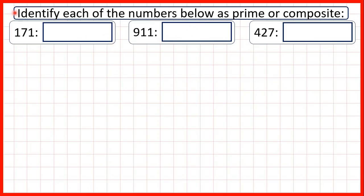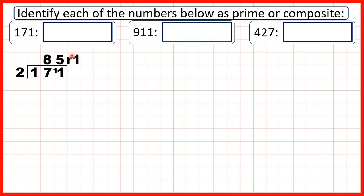We need to identify each of the numbers below as prime or composite. To find out if a number is a prime number, we need to find out whether it's a multiple of 2, 3, 5 or 7. So 171 divided by 2 will leave a remainder, because all multiples of 2 end in 0, 2, 4, 6 or 8, and 171 is an odd number. So if we divide it by 2, we get a remainder.